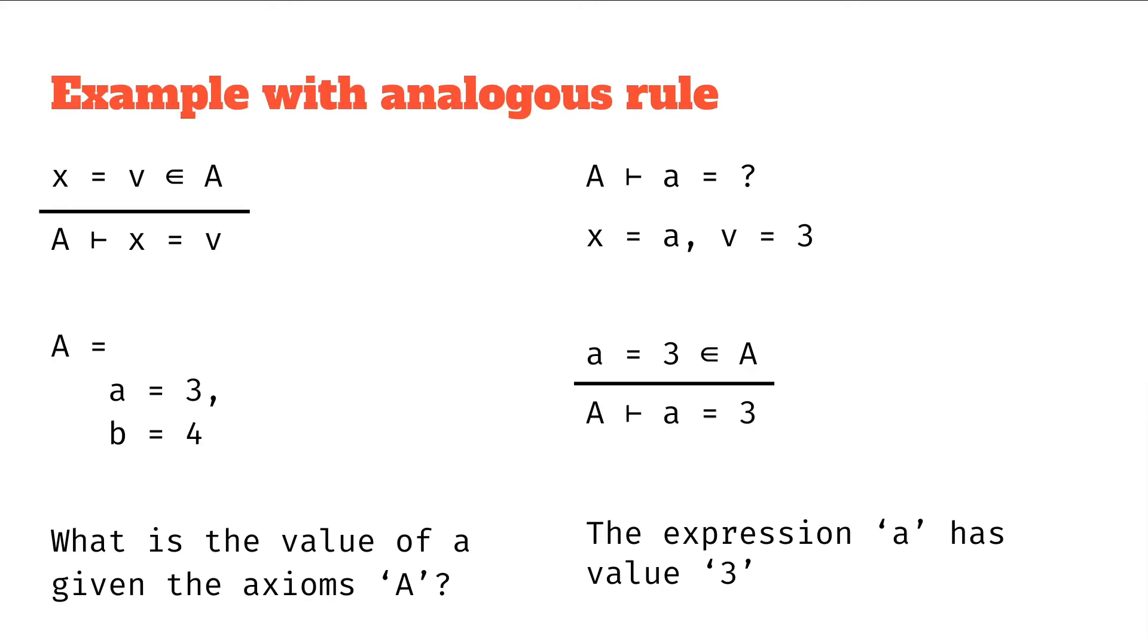We can substitute that in for the rule, where we can say, well, the variable x looks a lot like the variable A, the value v looks a lot like the value three in our context. We can put this in our rule, and we can say, well, the top part holds, right, because A equals three is in our axioms.